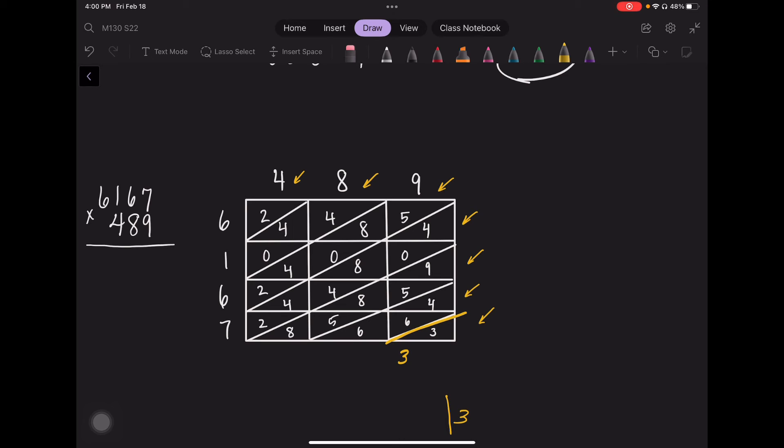Then I have 6 plus 4 plus 6 which is 16. And so I'm going to write the 6 down here and I'm going to carry over here. Then I have 8 plus 5 plus 8 plus 5 plus 9 plus that extra 1. That gives me 36.